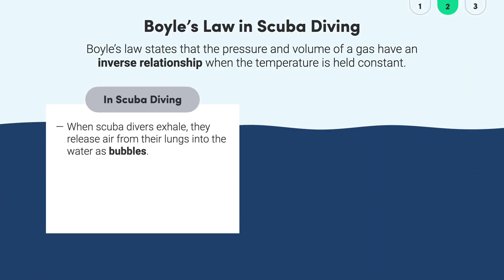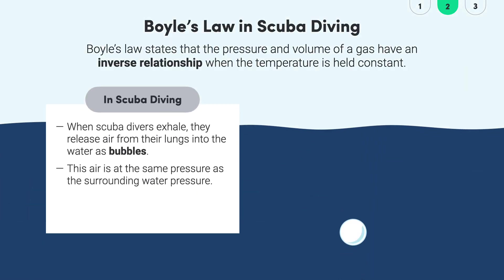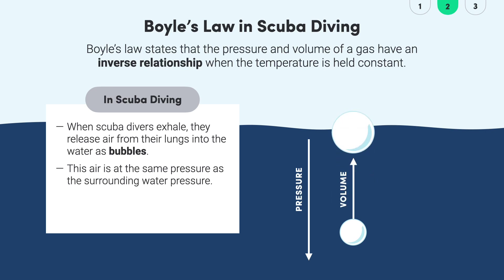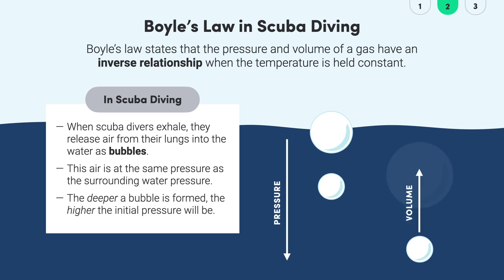When scuba divers exhale, they release air from their lungs into the water as bubbles. This air is at the same pressure as the surrounding water pressure. So when the diver exhales a bubble, the gas inside is under high pressure due to the surrounding water. As the bubble rises towards the surface, the pressure decreases and so the volume of the gas will increase. As a result, we see the bubbles expand as they rise. The deeper a bubble is formed, the higher the initial pressure will be, so a bubble formed deep in the water will end up much larger at the surface than a bubble formed near the surface.